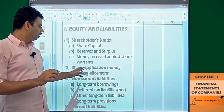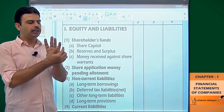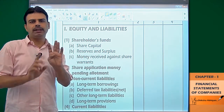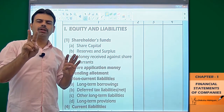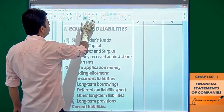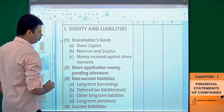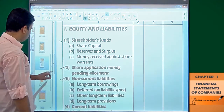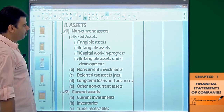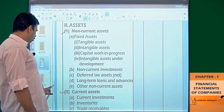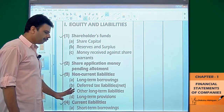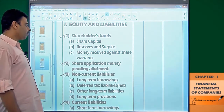On the liability side, there are four main headings: number one shareholder funds, number two share application money pending allotment, number three non-current liabilities, and number four current liabilities. On the asset side, there are two main headings: non-current assets and current assets. So four headings on the liability side and two main headings on the asset side.